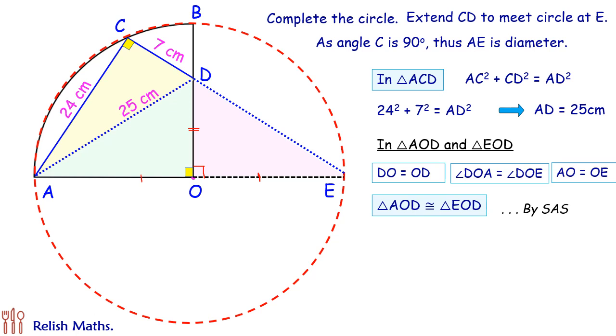If these two triangles are congruent, then the corresponding sides will be equal. So if AD is 25 centimeters, then DE will also be 25 centimeters.